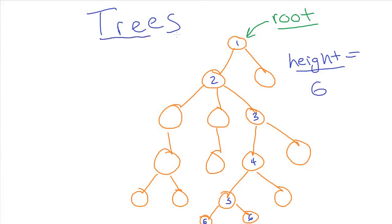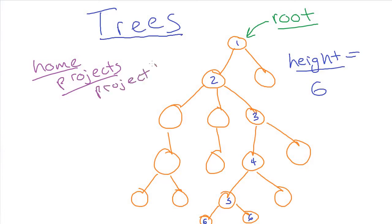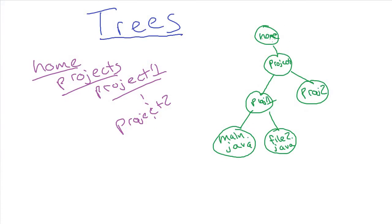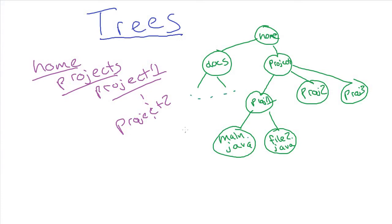Trees have lots and lots of applications in general. For instance, your file system can be thought of as a tree. If you have your home directory and then inside of that you have a projects directory, and then inside of that you have project one with a bunch of files, and then project two and so on. Your home directory would be the root of the tree, under that you have a subdirectory called projects which is a child, then you can have children for project one, project two, maybe project three. Trees are a great way of modeling any sort of data that has a hierarchical format like this.